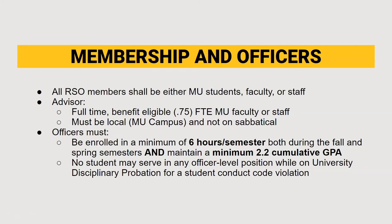All RSO members must either be MU students, faculty, or staff, meaning that members must be affiliated with the university in some capacity. An RSO's advisor must be full-time benefit eligible at 0.75 FTE MU faculty or staff, must be local to the MU campus, cannot be a worker at UMSL, S&T, or UMKC, and cannot be on sabbatical. Officers must be enrolled in a minimum of six hours per semester during fall and spring, and maintain a minimum 2.2 cumulative GPA. No student may serve in any officer level position while on university disciplinary probation or a student conduct code violation.